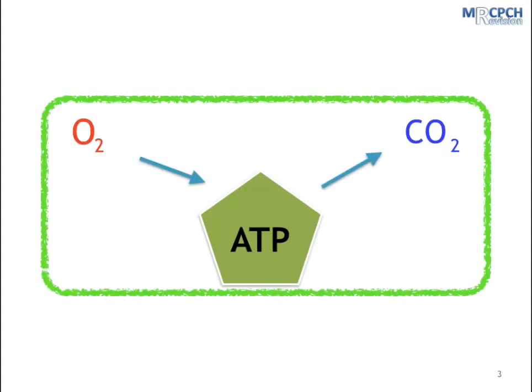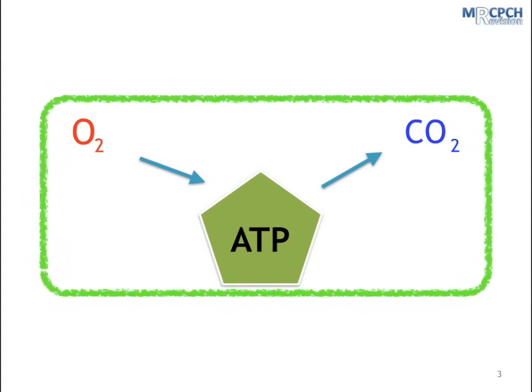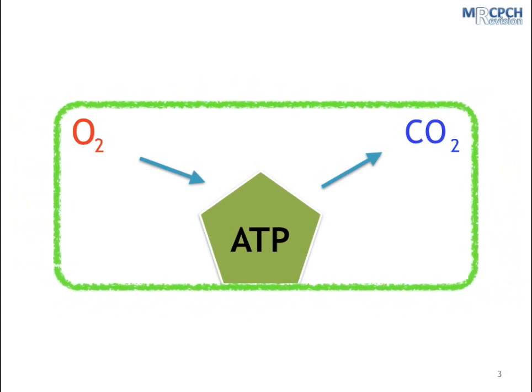So the first thing to remember is that this takes place in cell mitochondria. It is an aerobic process, whereby oxygen is consumed, and carbon dioxide and water are formed as waste products. And this is the main way in which cells produce the energy that they need to carry out all their daily functions.